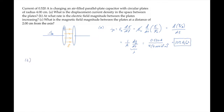Part B asks for the rate at which the electric field magnitude between the plates is increasing — that's dE/dt. We can solve for it using the same expression that we used in Part A: that time derivative equals the displacement current density divided by ε₀.